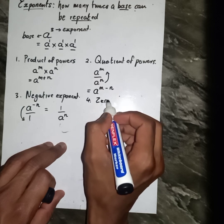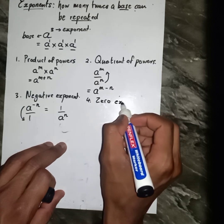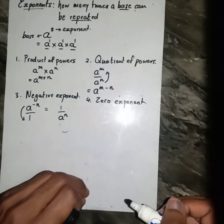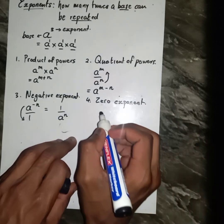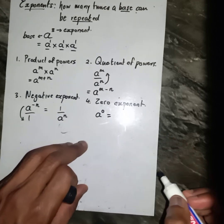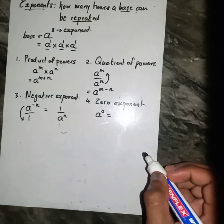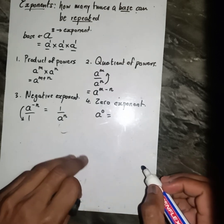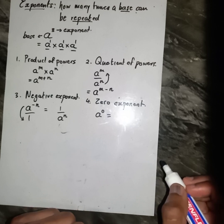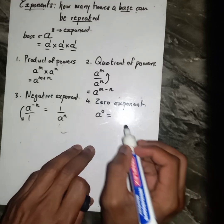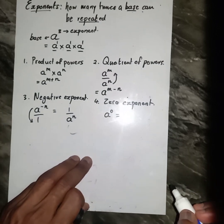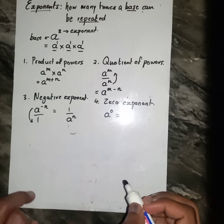We also have the fourth law — the zero exponent. It's like if I have a base of a with an exponent of zero. For any base with an exponent of zero, you just need to know that it changes to one.